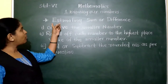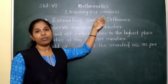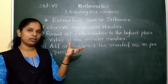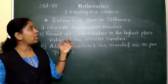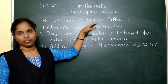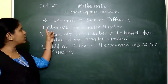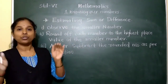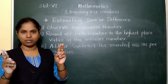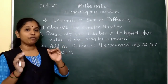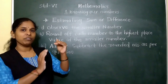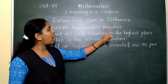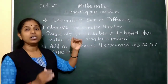Next we will learn about estimating sum or difference. When we have to do addition or subtraction of two numbers, how do we estimate them? There are rules. First: observe the smaller number. For addition or subtraction, two numbers are given. From those two numbers, we see which is the smaller number. Second rule: round off each number to the highest place value of the smaller number.